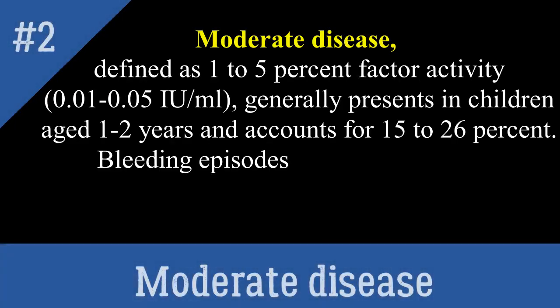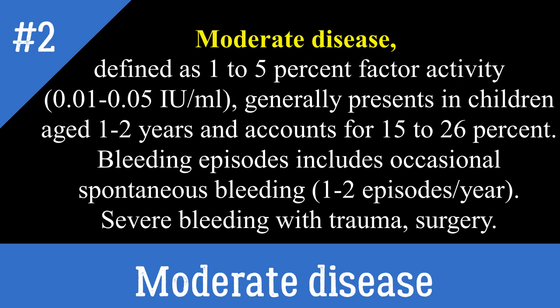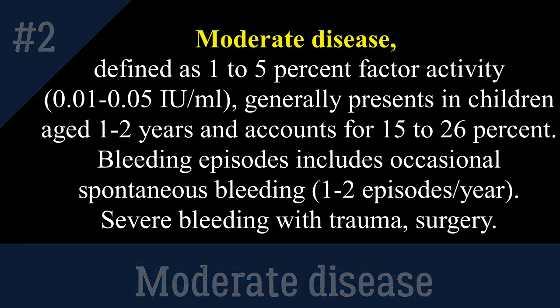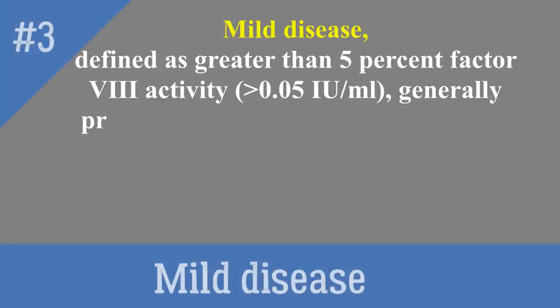Moderate disease is defined as 1 to 5 percent factor activity (0.01–0.05 IU/mL), generally presenting in children aged one to two years, and accounts for 15 to 26 percent of cases. Bleeding episodes include occasional spontaneous bleeding of one to two episodes per year, with severe bleeding occurring with trauma or surgery.